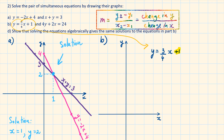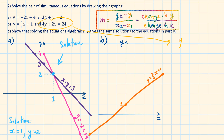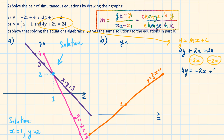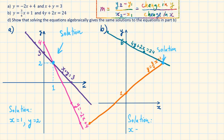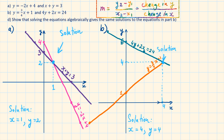Part b: First, let's plot the y-intercept. Then the gradient is 3 over 4 — 3 up and 4 across. To draw the next line, we rearrange it to compare with y equals mx plus c: subtract 2x from both sides, then divide by 4. Now we have the equation in y equals mx plus c format. The y-intercept is 6; plot this, then draw a gradient of minus half — 1 down and 2 across starting from 6. The two lines cross at (4, 4). This is the solution.